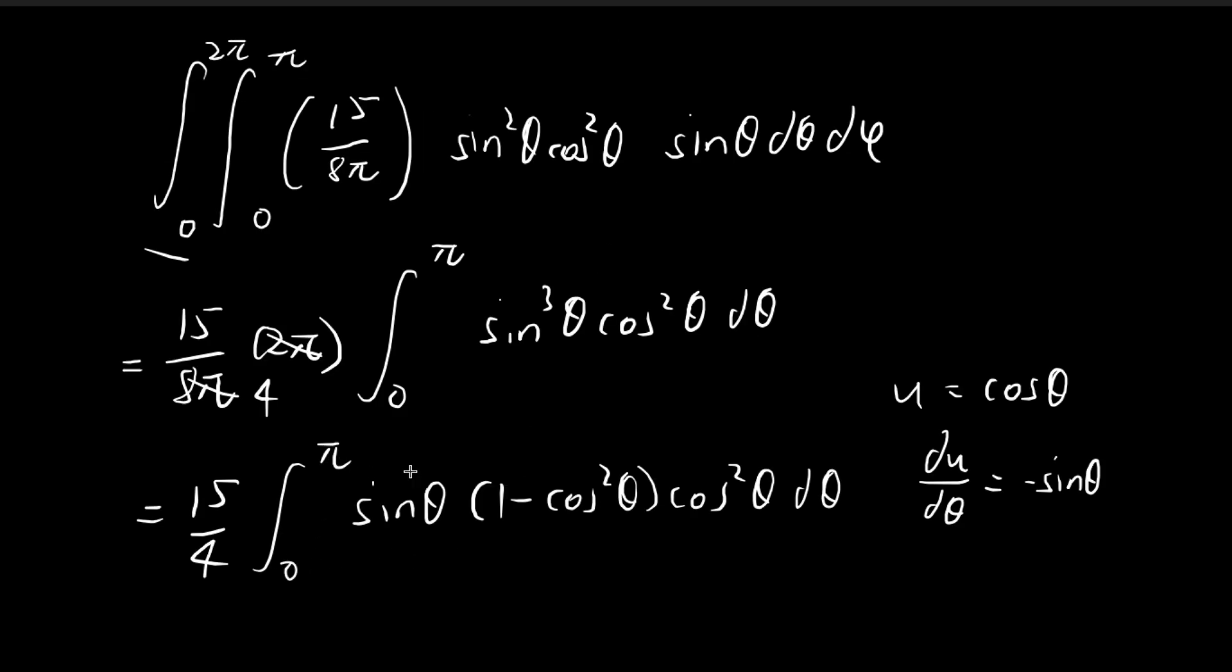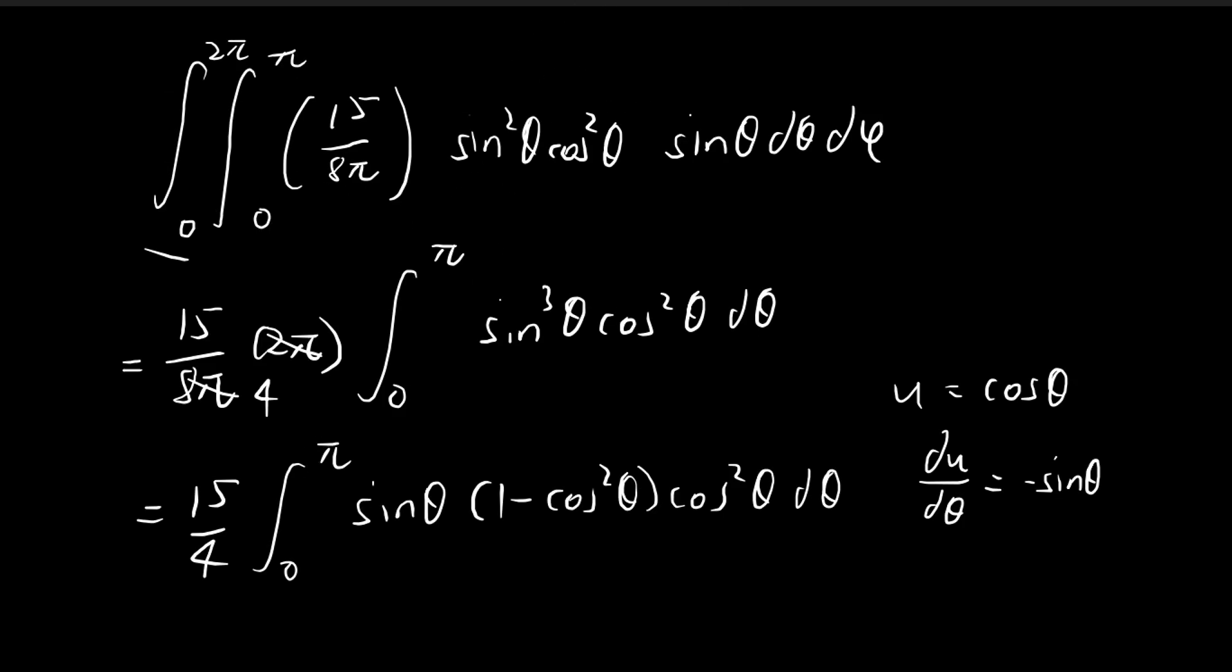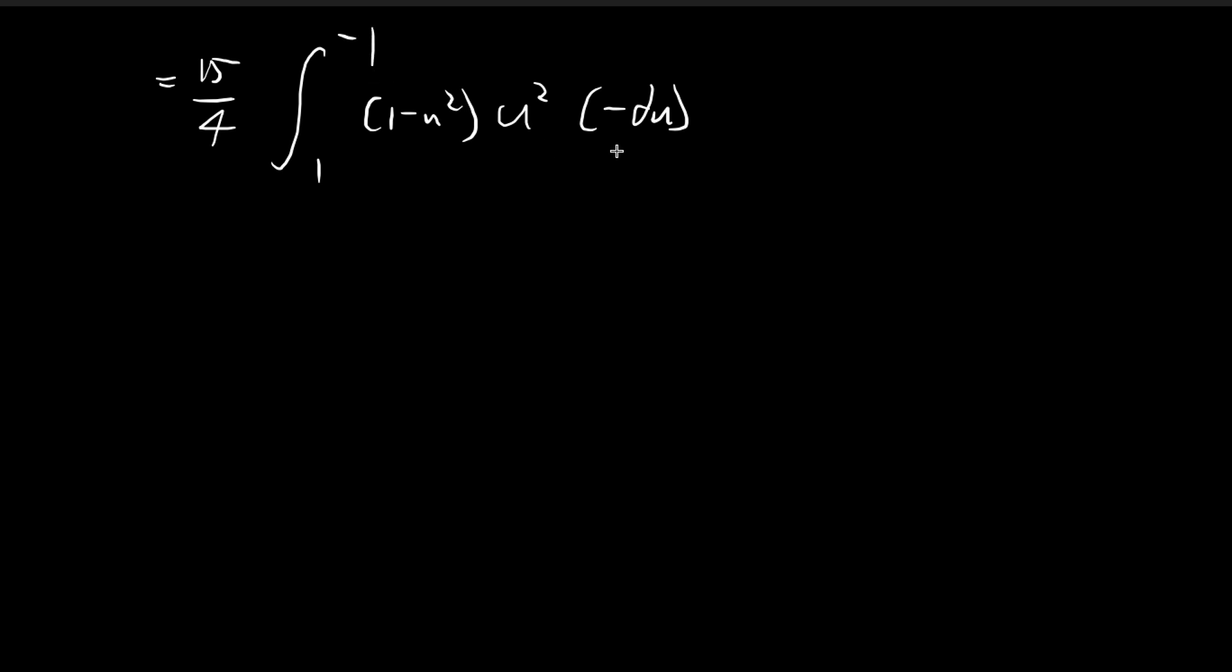But now under this substitution, cosine 0 is equal to 1, and cosine pi is equal to negative 1. So we put in negative 1 here. And then because of this negative sign, I can take this away, and then I can flip the order of the integral from negative 1 to positive 1. And then you can see that this is a function that is symmetrical about the y-axis.